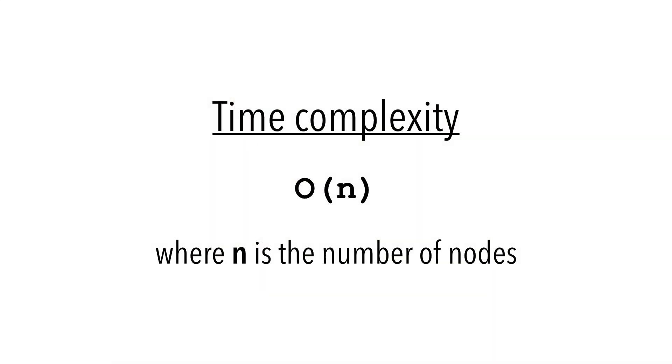The time complexity of level order tree traversal is O(n). This is a constraint of the while loop, as we dequeue each node exactly once.